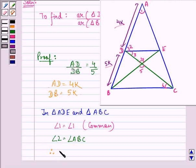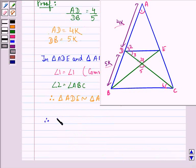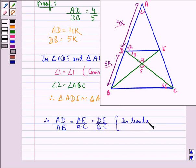Therefore, triangle ADE is similar to triangle ABC by angle-angle similarity criterion. Since these two are similar triangles, therefore AD upon AB is equal to AE upon AC is equal to DE upon BC because in similar triangles, corresponding sides are proportional.